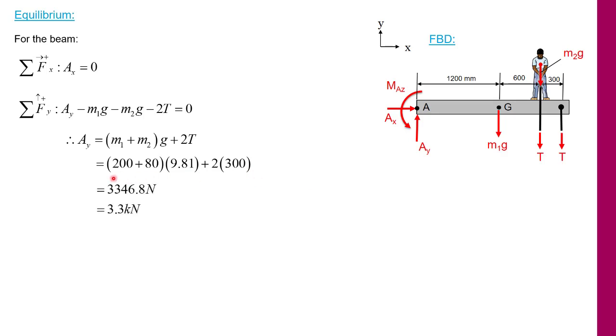I can add those and I'll get 3,346.8 newtons or about 3.3 kilonewtons. Now if I do sum of the moments, I'm going to pick point A as my reference point and counterclockwise as my positive reference direction. Because I pick point A, both Ax and Ay pass through A and do not contribute to the moment equilibrium.